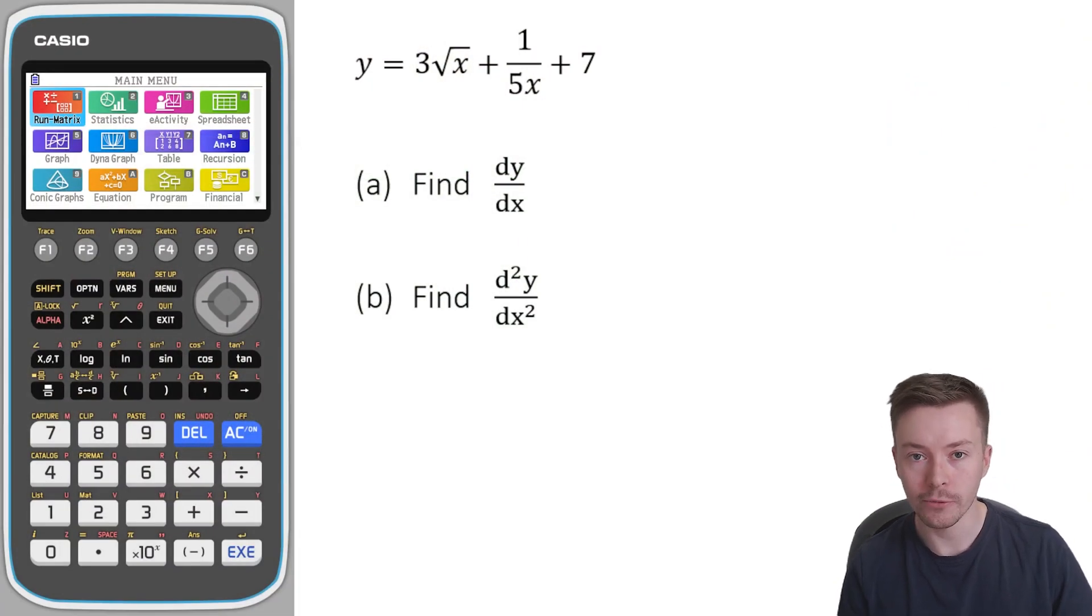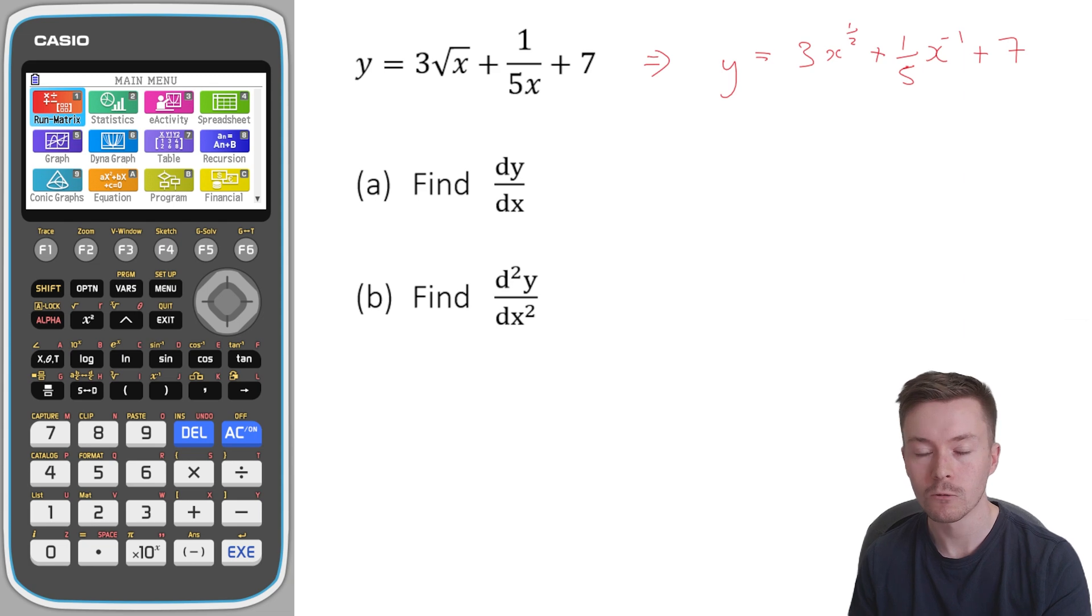Right, so as I said before, I'm going to go through some straightforward differentiation. I'm going to differentiate this equation here, this function. Now the first thing I want to do is write this in index form. So let's do that. I'm going to get y is equal to 3x to the power of a half. And then I'm going to get plus 1 fifth x to the power of negative 1. And then I've still got the plus 7.